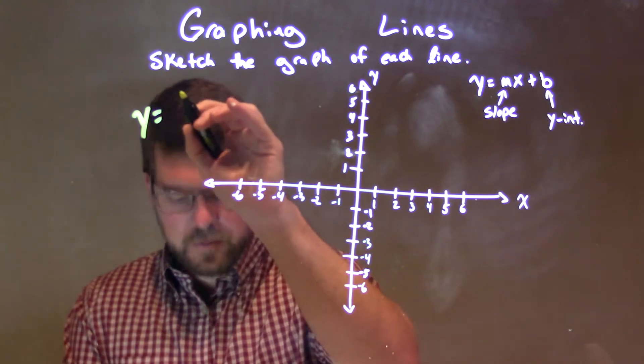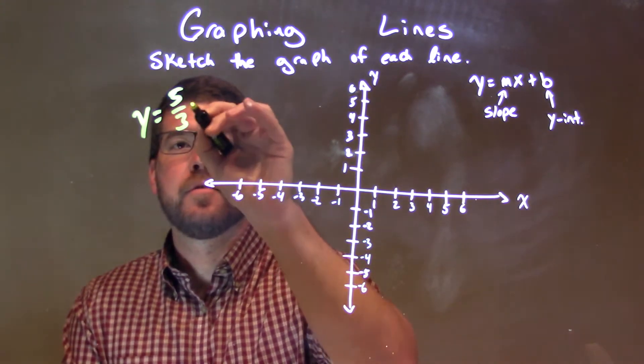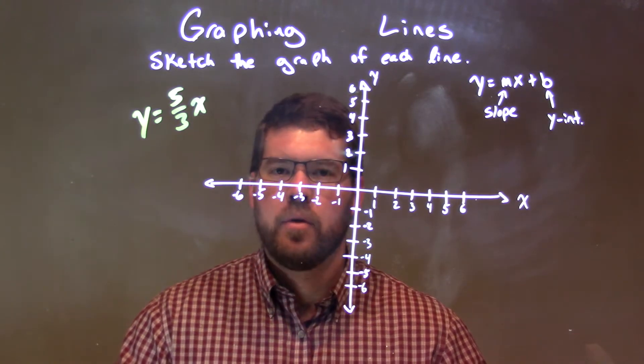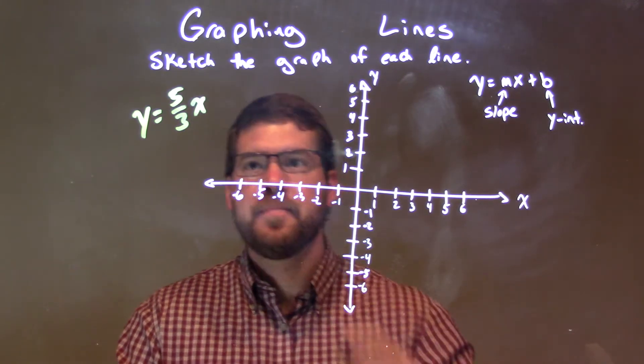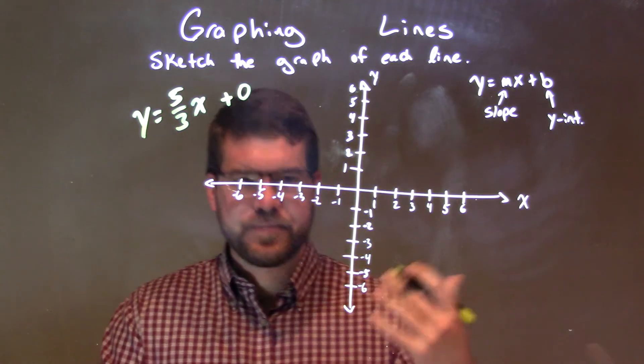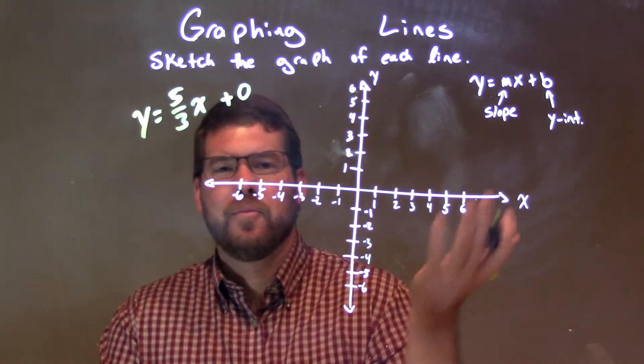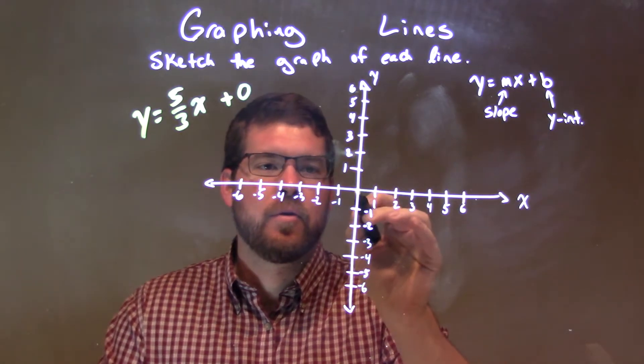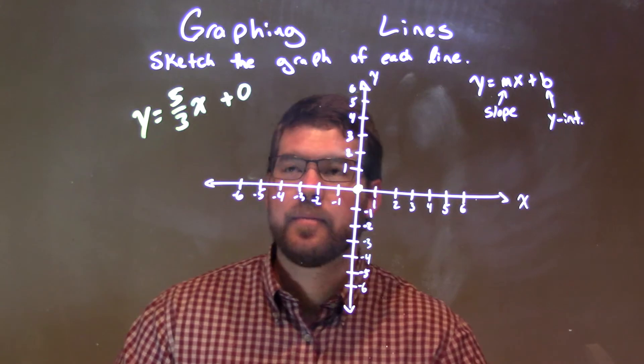y equals 5 thirds x, okay? So if I'm just given 5 thirds x, that's the b value, right? And really, our b value is plus 0. Now, we don't always write it, we don't write a plus 0, but that b value being 0 here really shows that we're crossing the origin right there at 0, 0.